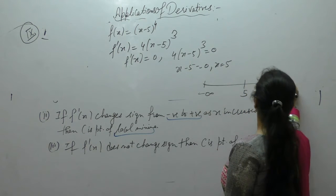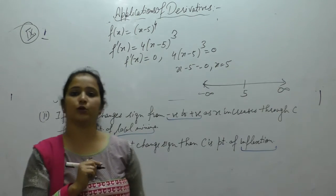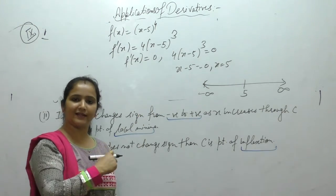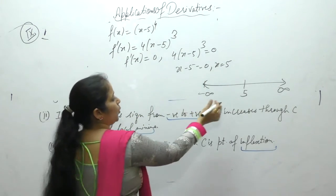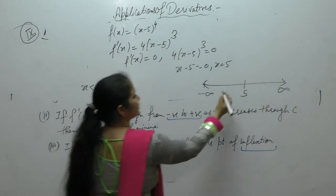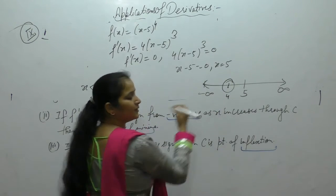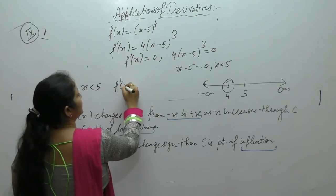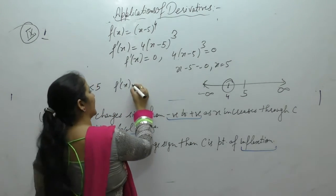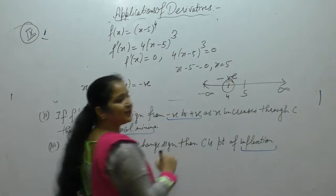Now we want to find the sign of f'(x), whether it is positive or negative. When x is less than 5, let us take x = 4. Putting into f'(x): 4(4-5)³ = 4(-1)³ = negative. So here we have a negative sign.